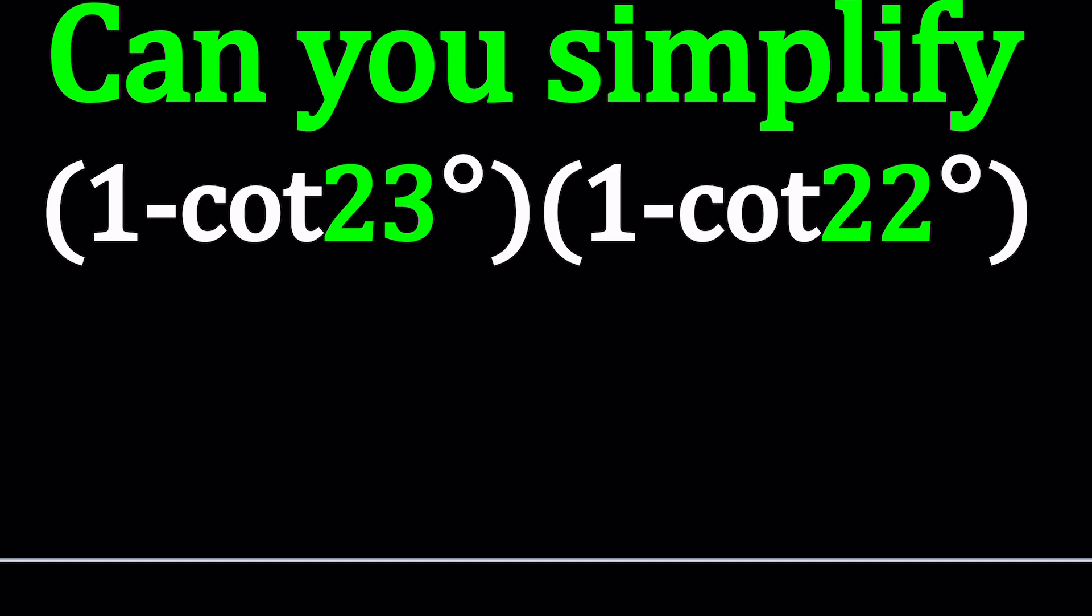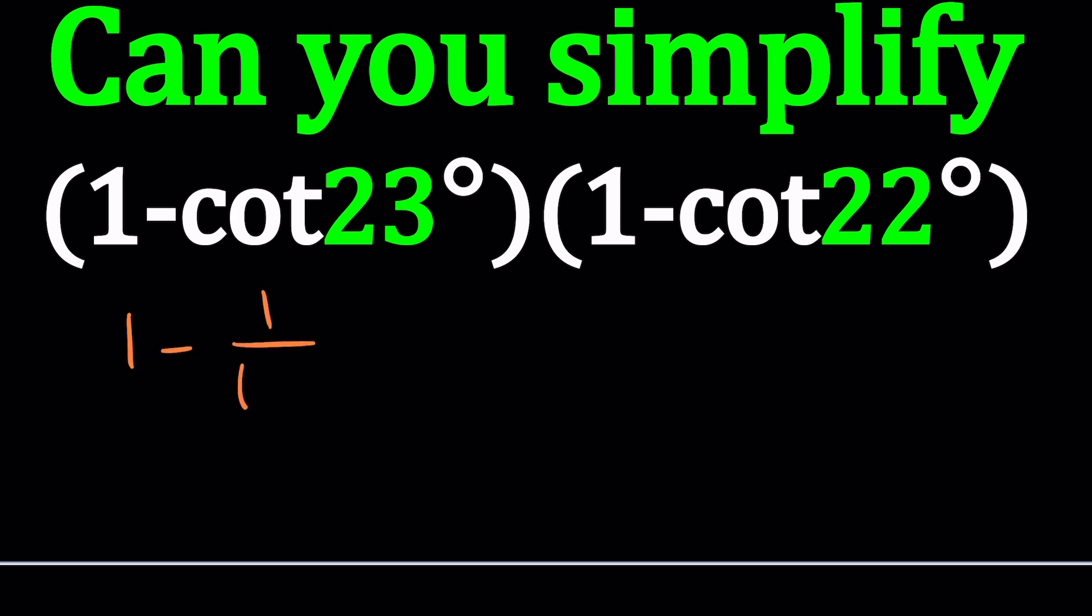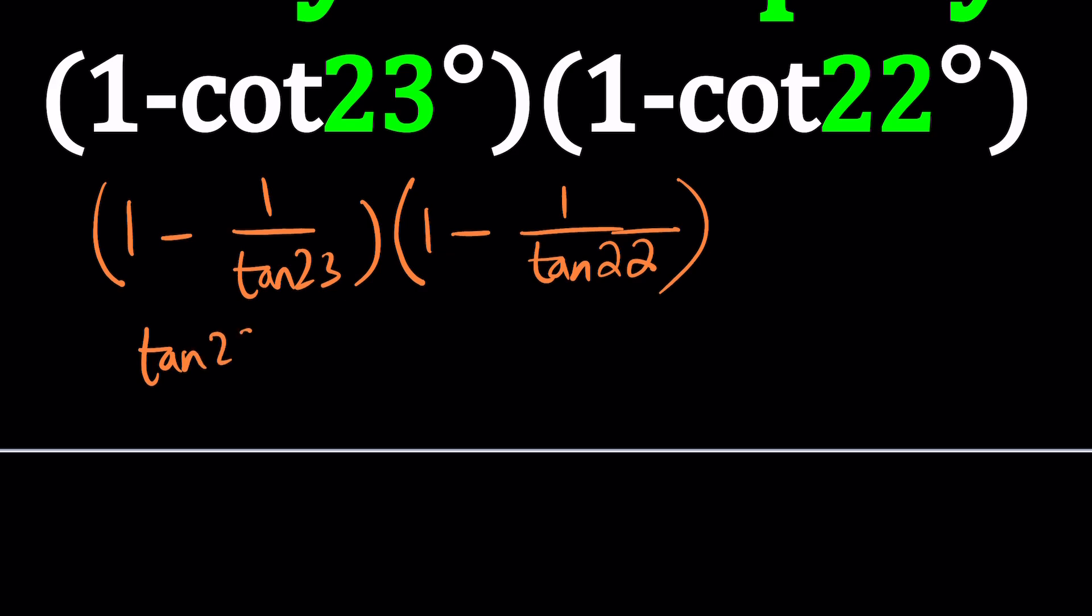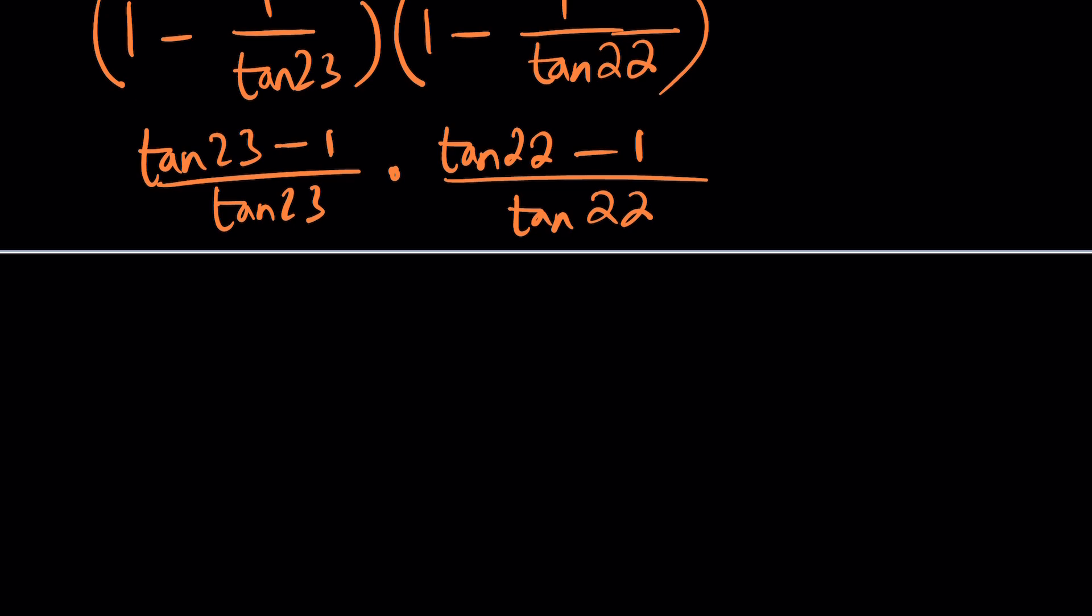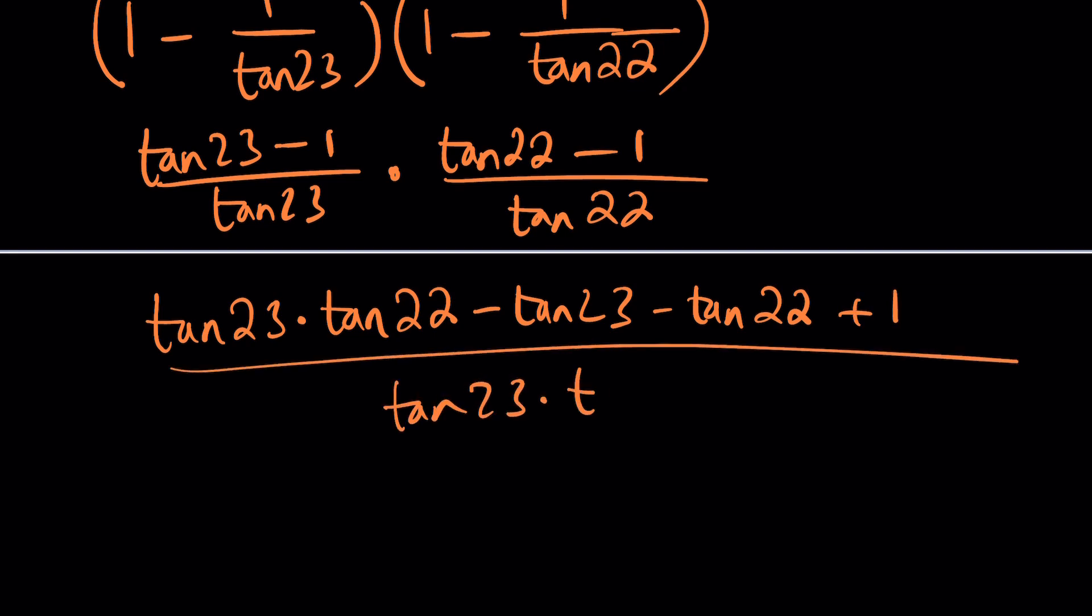First, we can try to turn this cotangent into something we know. Maybe something like tangent. We can write it as 1 over tangent 23. Like I said earlier, I'm not going to write the degree symbol from now on. So we have the following product, and definitely you can make a common denominator. Tangent 23 minus 1 divided by tangent 23 times tangent 22 minus 1 divided by tangent 22. We can try distributing. Distributed property gives us tangent 23 times tangent 22, and then minus tangent 23 minus tangent 22 plus 1 divided by tangent 23 times tangent 22.